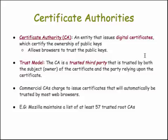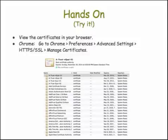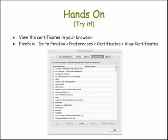Commercial certificate authorities charge money to organizations that create browsers, and they automatically provide a set of certificates built into the browsers. For example, Mozilla maintains a list of at least 57 different trusted certificate authorities with corresponding certificates built right into its software. You can try this yourself — go to Chrome, Preferences, Advanced Settings, HTTPS/SSL, and choose the Manage Certificates button to see a list of all the certificates the Chrome browser has. Similarly, you can do the same thing with Firefox. Click on some of the certificates to see the information they provide, and you'll see they are using RSA in various forms in the digital certificate.